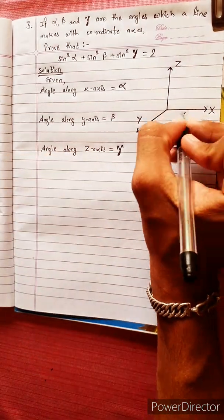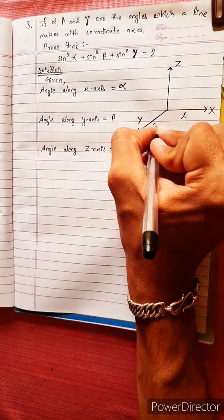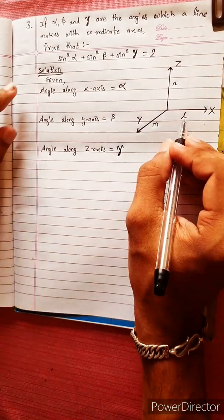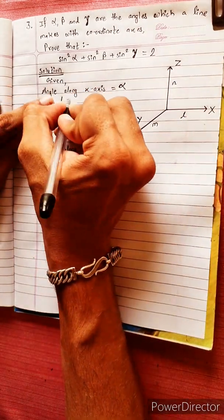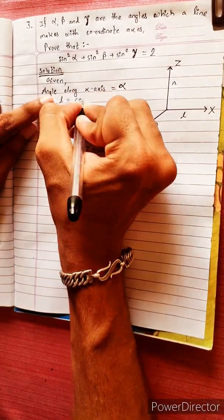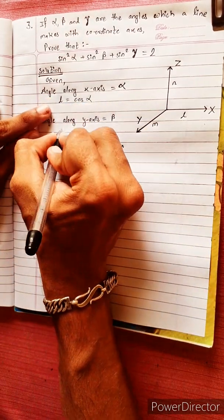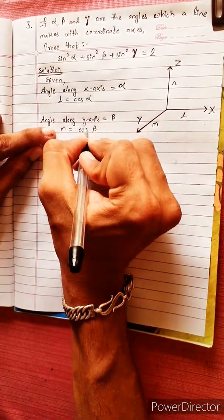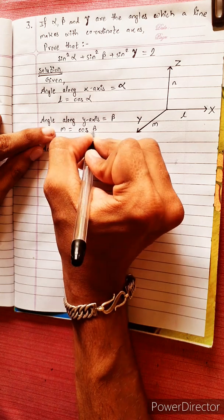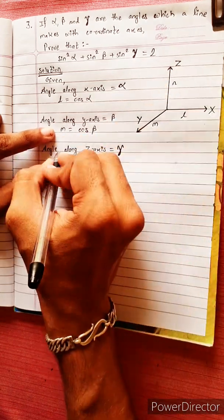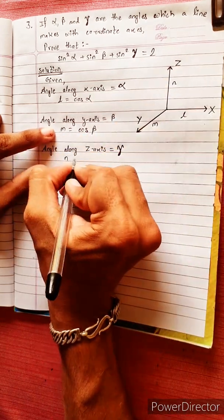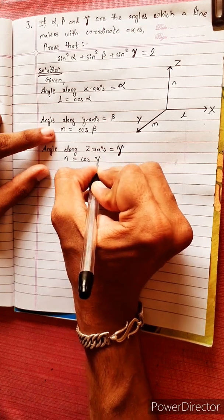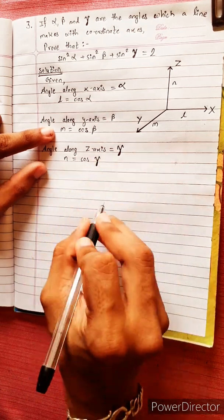Now we have the x axis, y axis, and z axis. This is the direction cosine. The direction cosines are: l equals cos alpha along the x axis, m equals cos beta along the y axis, and n equals cos gamma along the z axis.